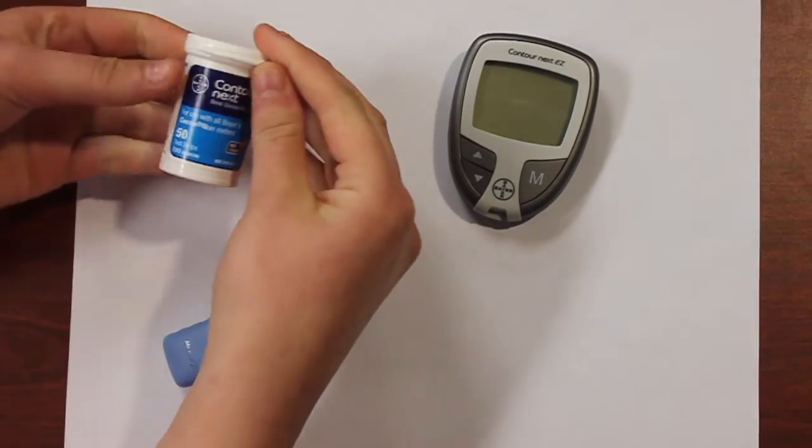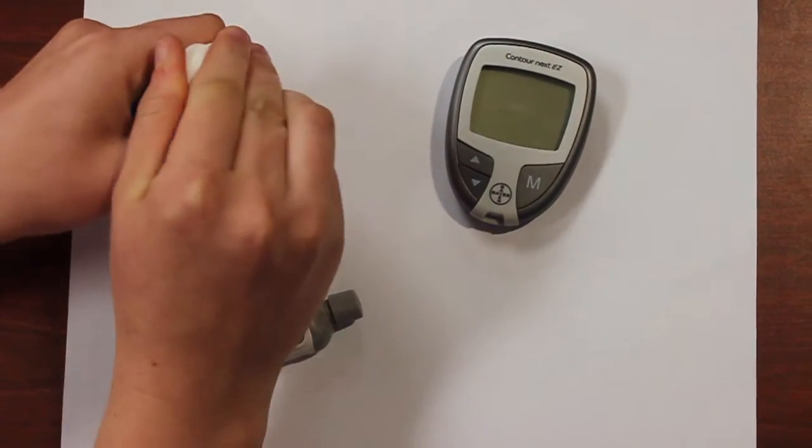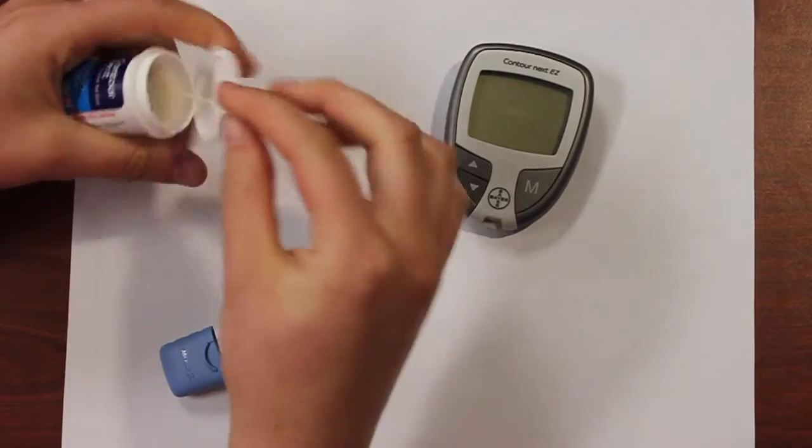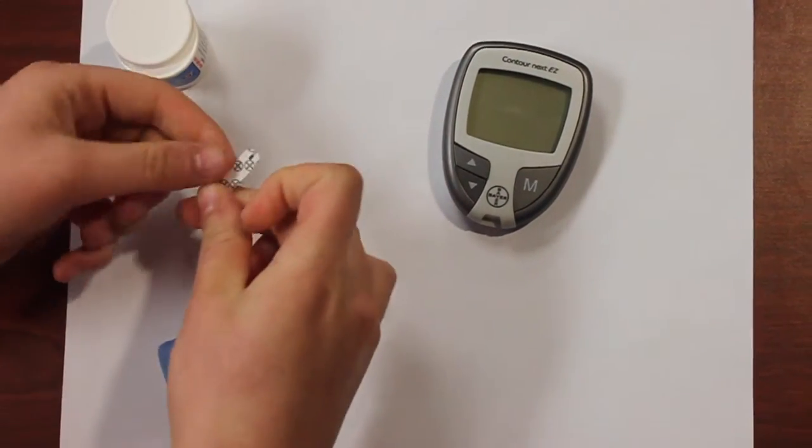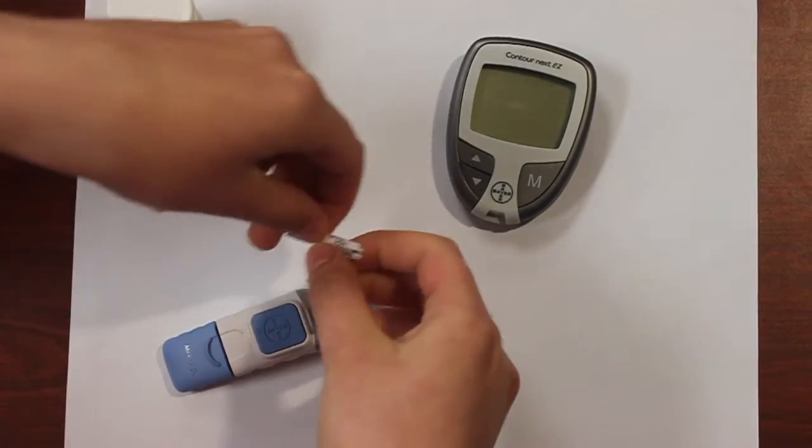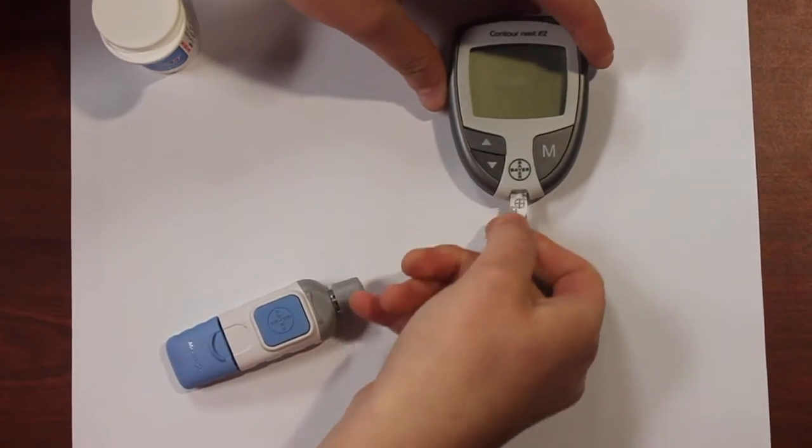In order to use the glucometer, first use a Contour Next test strip provided with the device. It is about the size of the tip of your index finger. Then place the test strip into the port on the meter.